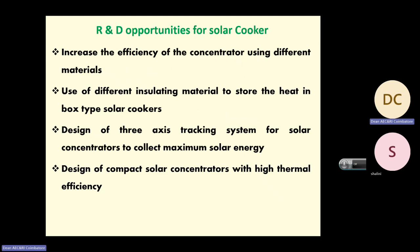Every week the solar cooking systems have some problem. R&D areas include use of different insulating materials to store heat in box-type solar cookers, design of three-axis tracking systems for solar concentrators to collect maximum solar energy, and design of compact solar concentrators with high thermal efficiency.